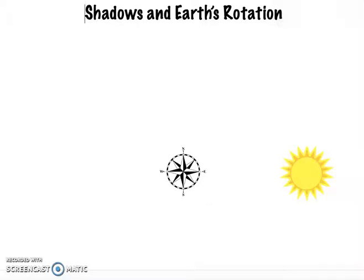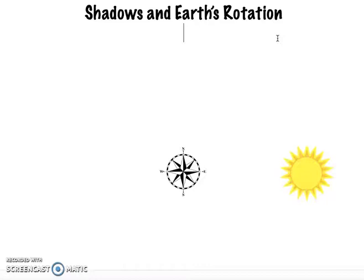Hi guys, this is Miss Trejo and today I'm going to do a video on shadows and Earth's rotation. We've talked about how Earth rotates on its axis every 24 hours and how that helps create the day and night cycle. In this video, we're going to touch a little bit about Earth's rotation and how that makes it seem like the sun is moving, when the sun does not move.